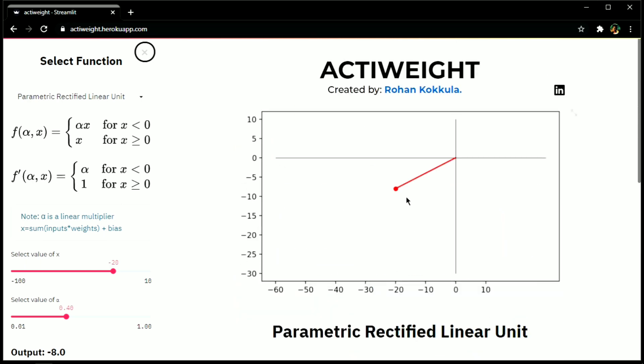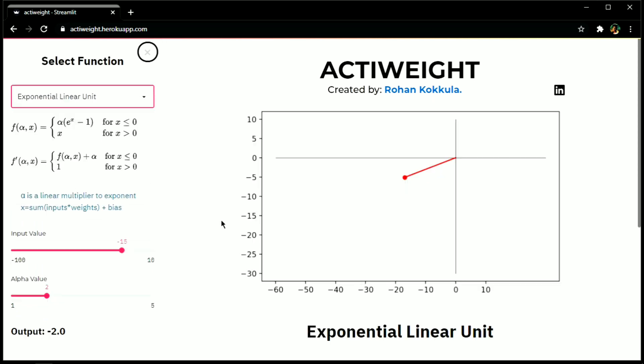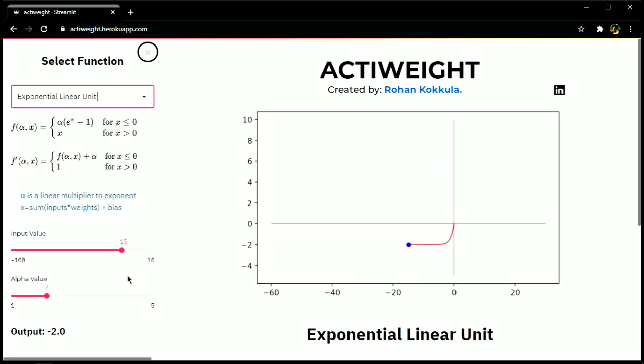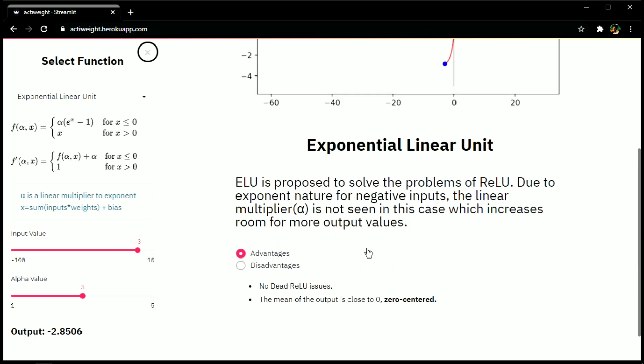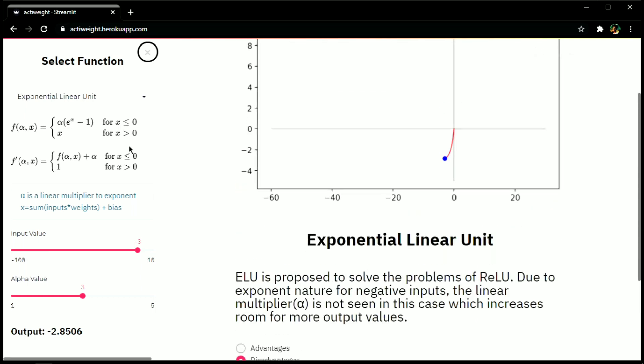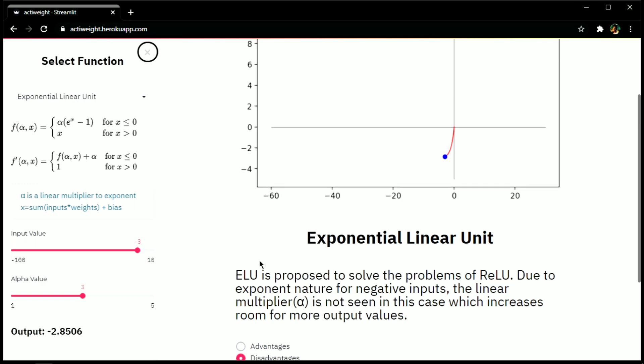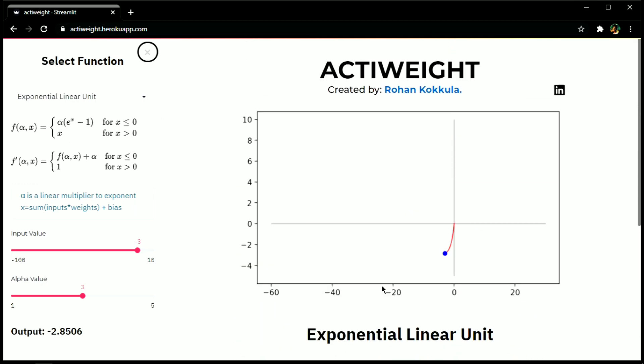What if for negative values, we need exponential functionality instead of linear multiplicity? Well, that's our next activation function, exponential linear unit. Note that for positive values of input, elu is same as relu. Here alpha is a constant multiplier which acts as a learnable parameter. If we'll talk about advantages, there is no dead relu problem and also this is zero centered. Since there is a presence of exponent calculations, you need to pay for it.